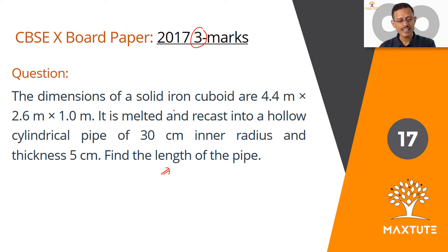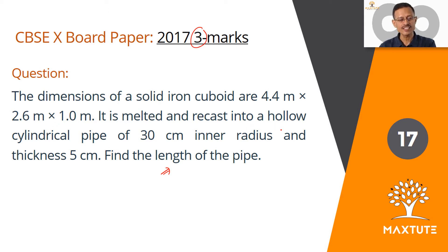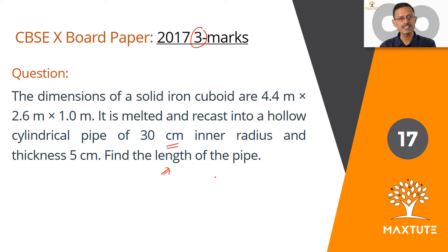Let's read the question. The dimensions of a solid iron cuboid are 4.4 meters by 2.6 meters by 1 meter. It is melted and recast into a hollow cylindrical pipe of 30 cm inner radius and a thickness of 5 cm. We need to find the length of the pipe.